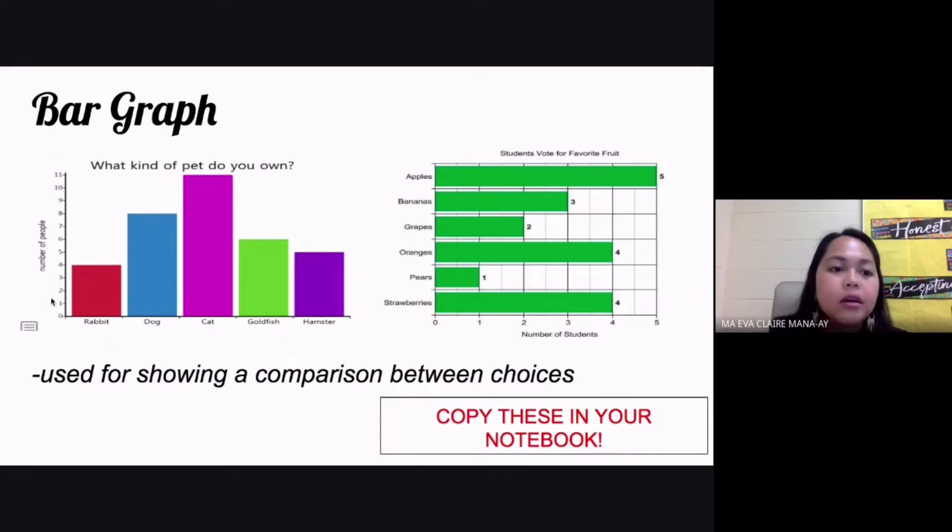You have the different number of people that own a certain type of pet. Your bar graph is used for showing a comparison between different choices, different criteria, different genres if you're talking about music or movies.